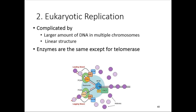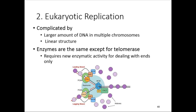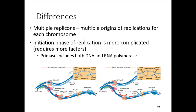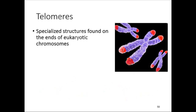Eukaryotic replication is more complicated because there is more DNA and chromosomes are linear. Rather than replicating in a simple circular fashion, eukaryotes have to deal with the ends of chromosomes, which requires an enzyme called telomerase. There are also multiple origins of replication — called replicons — rather than just one. The initiation phase is much more complicated, requiring many more factors and proteins, and primase is needed for both DNA and RNA polymerase.